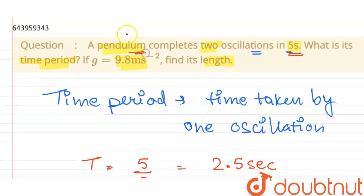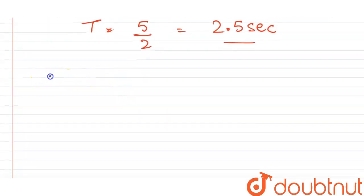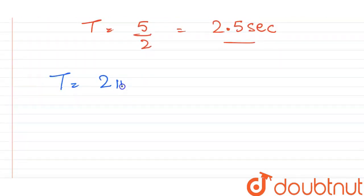Now we have found the time period, we need to find its length taking g as 9.8. All right, so we know time period is given by 2 pi under root l upon g. We need to find length.